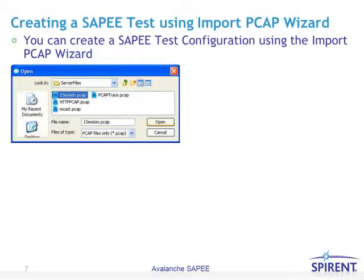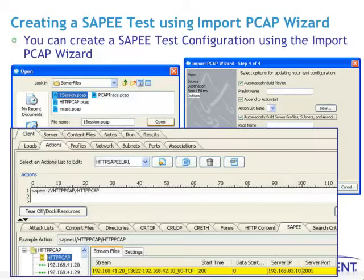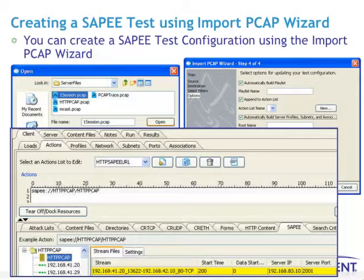You can create a SAPI test configuration using the Import PCAP Wizard. Once you have identified the PCAP that you wish to read in and launch the wizard, you would go through the steps, and eventually you would end up creating a test configuration that supports the PCAP file. It will automatically build all of the SAPI elements necessary to run the test. However, you still will have to go in and modify some of those elements before you run the test.